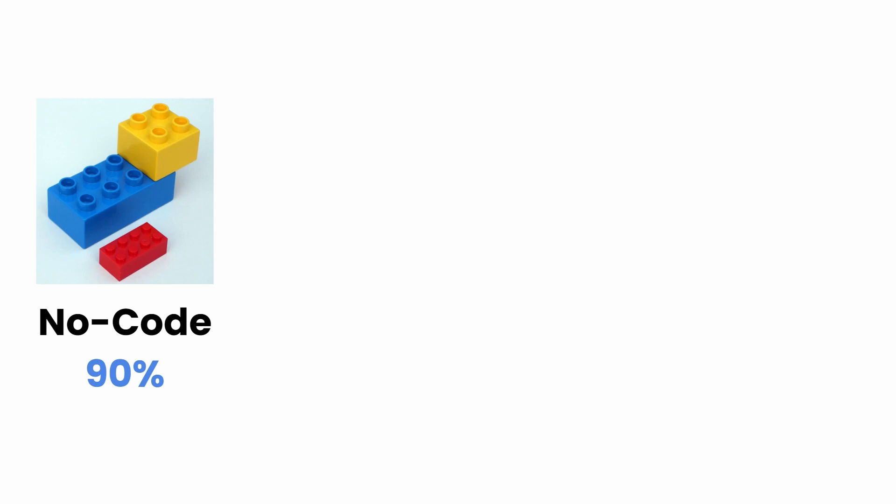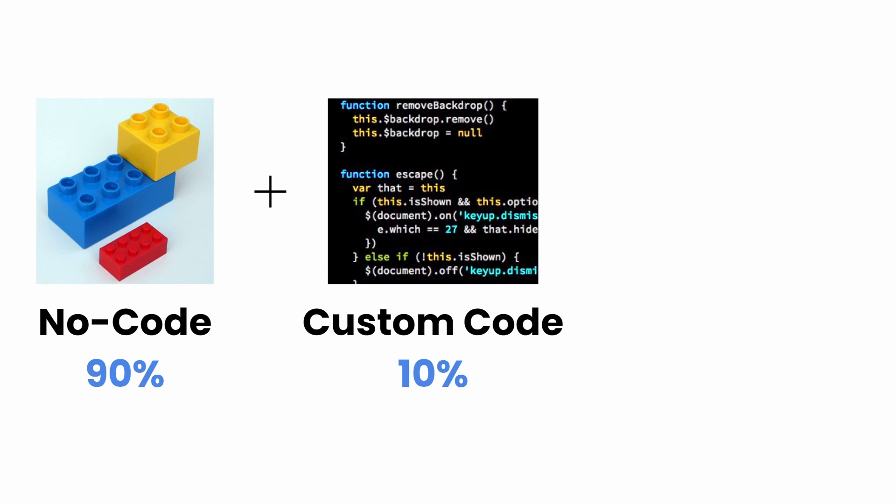Then that little bit extra that we need to custom code — let's just add that in and string everything together. That gives us a low code solution: 90% no code plus 10% custom code. That's low code.